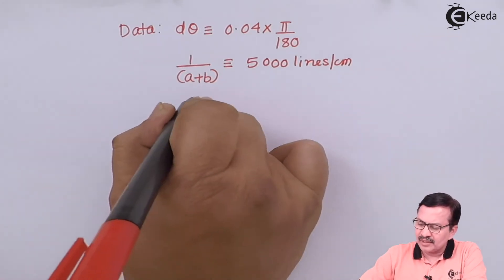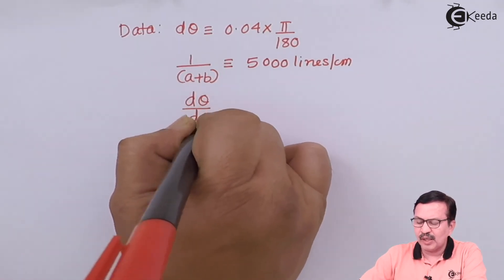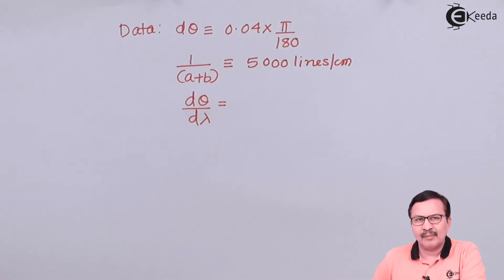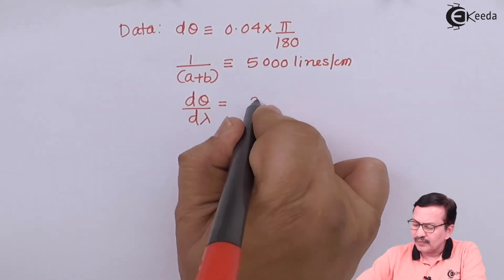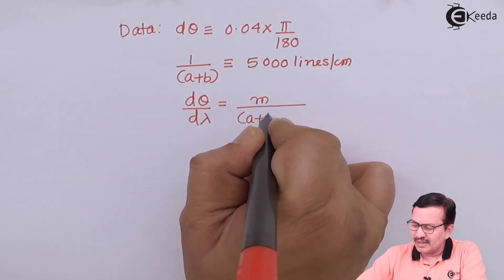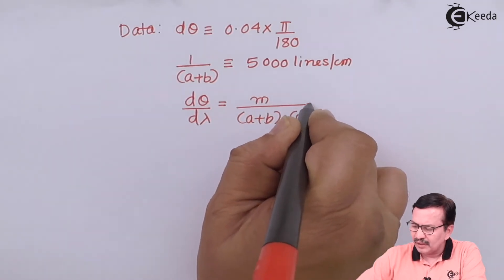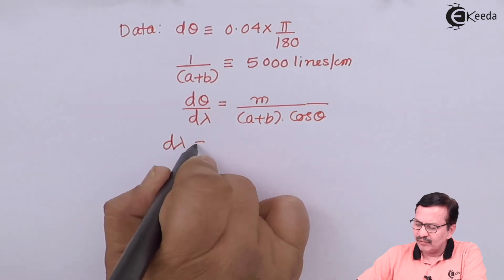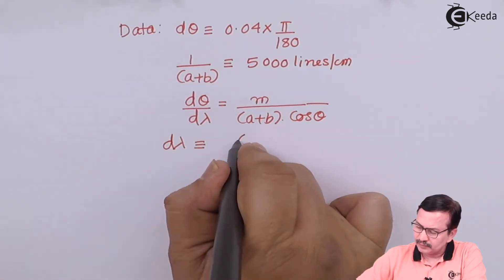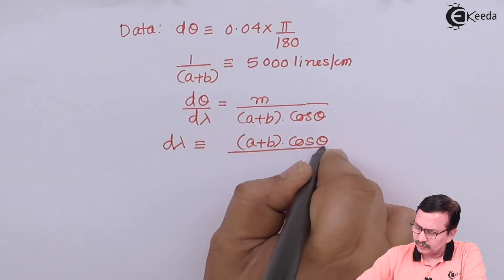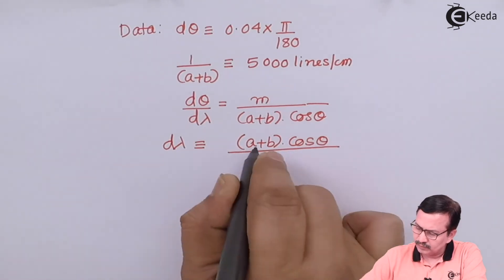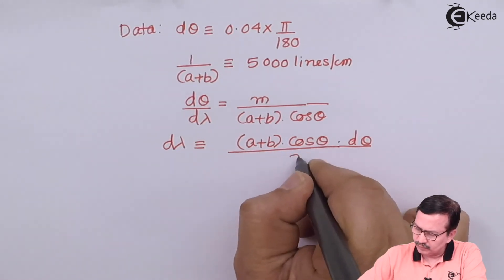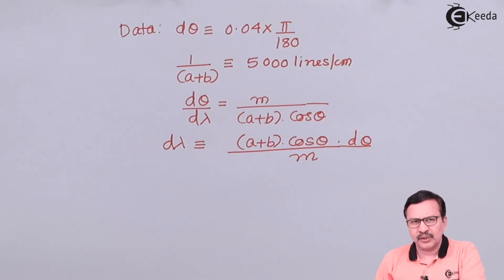With this data, now let us rewrite this expression for the dispersive power of a grating which is dθ/dλ equals m/(a+b)cosθ. We assume that θ equals 0, therefore cosθ will be equal to 1, and hence dλ will be equal to (a+b)cosθ times dθ divided by m.